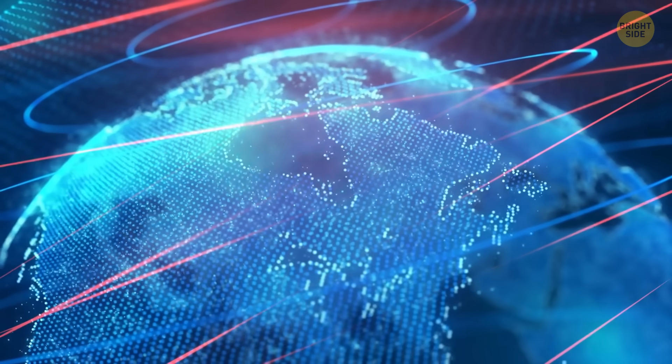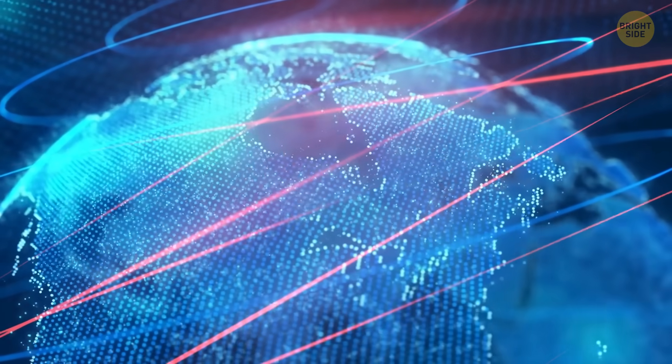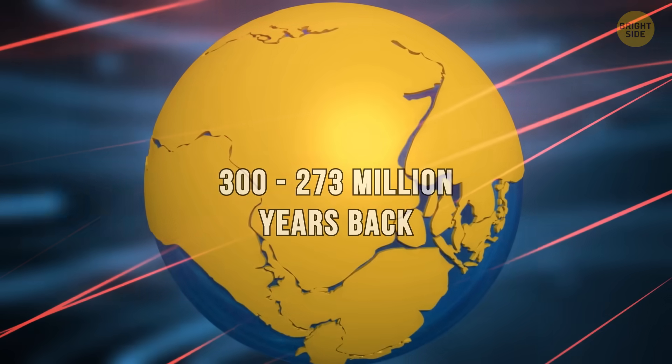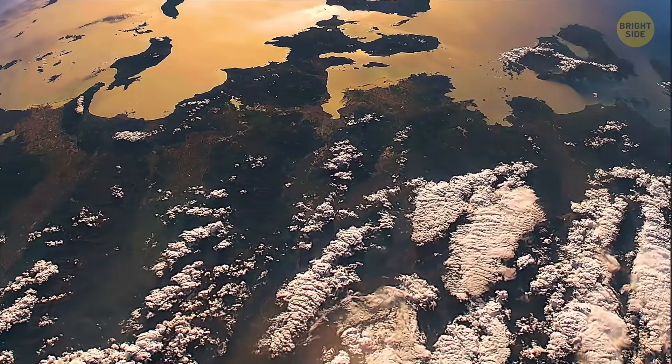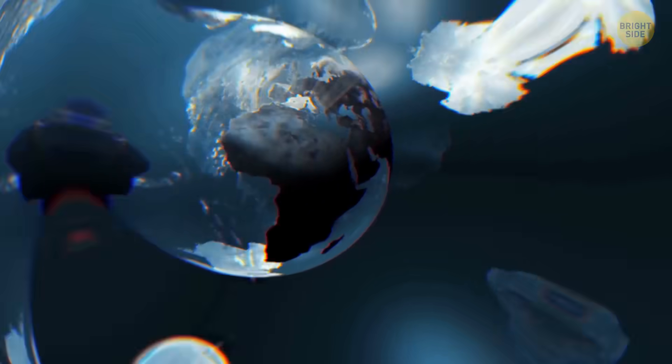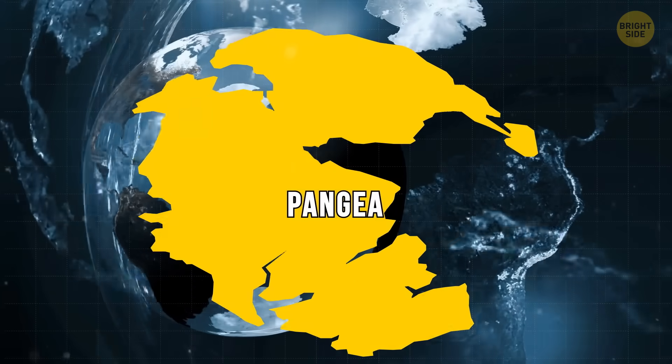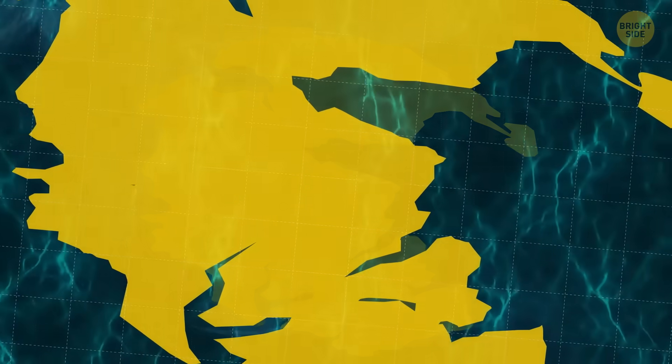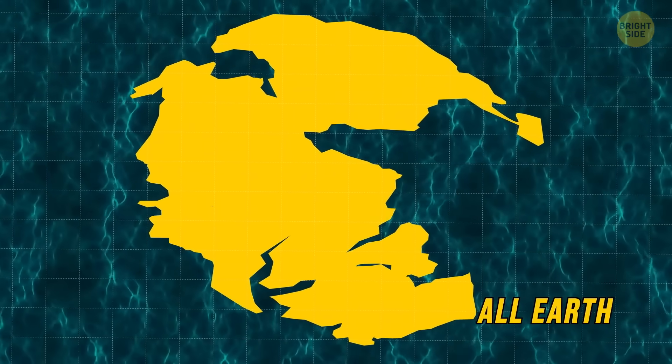Now, history teaches us that the supercontinent existed a long time ago, around 300 to 273 million years back. At that time, all the continents on Earth were buddies and hanging out together. They formed an amazing crew called Pangaea. The name comes from a Greek word which means all the Earth.